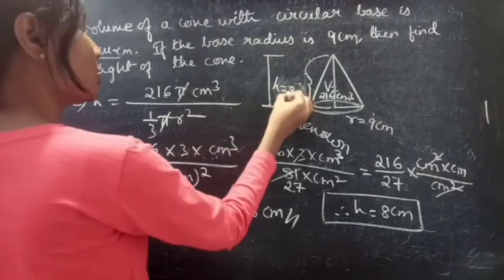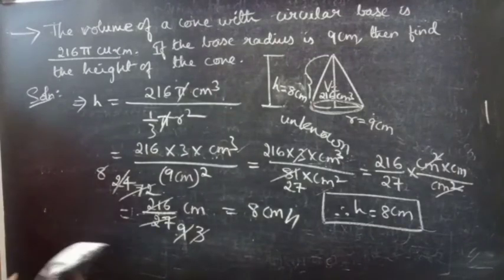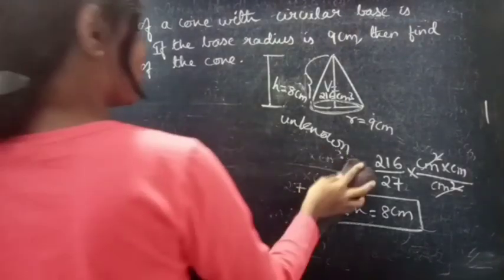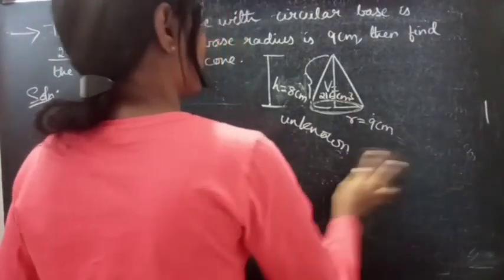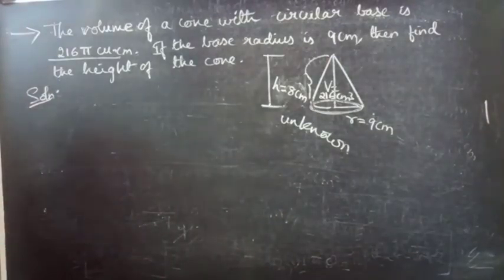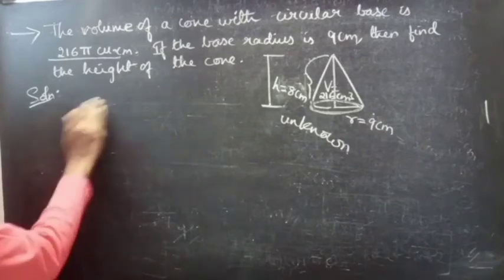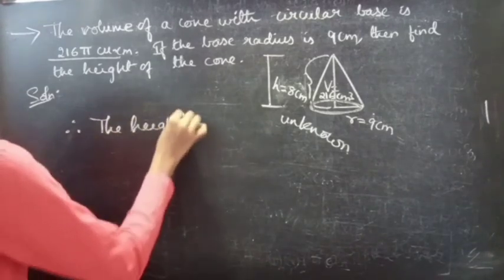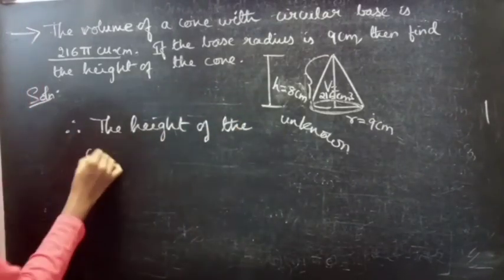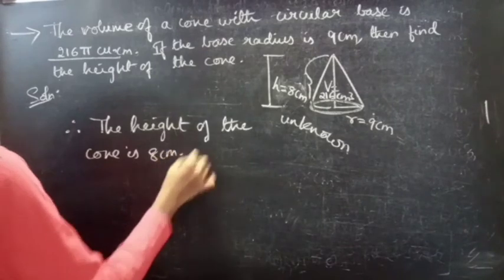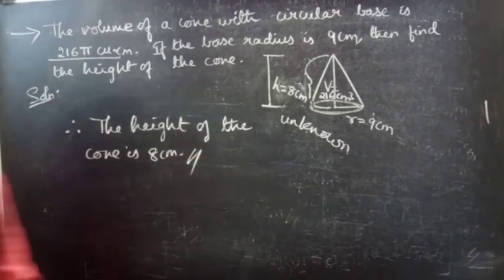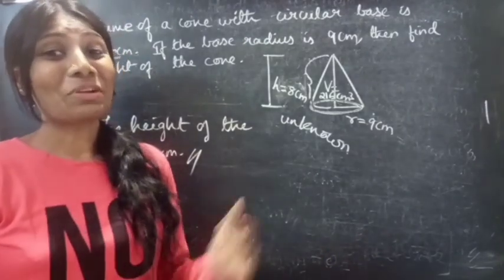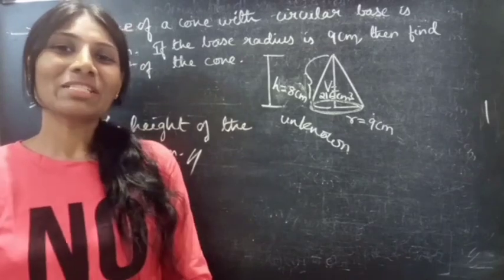We got the value of h equals to 8 centimeter. Therefore, the height of the given cone is 8 centimeter. So we have seen a problem from cones, from mensuration or volumes. This is all for now. Hope you will understand. We will see you in the next video. Until then, bye-bye.